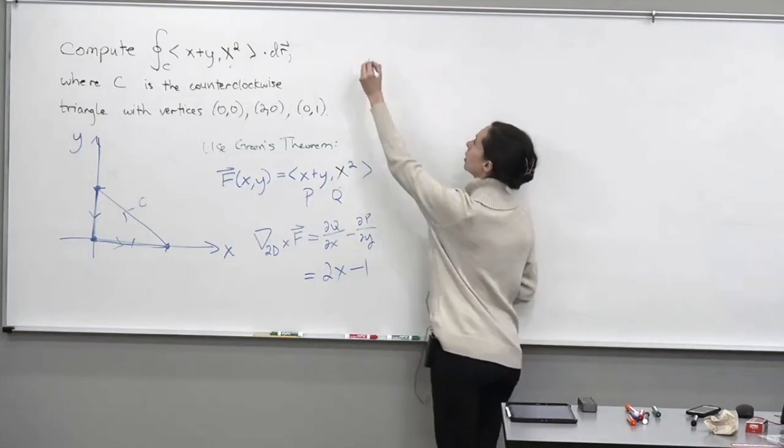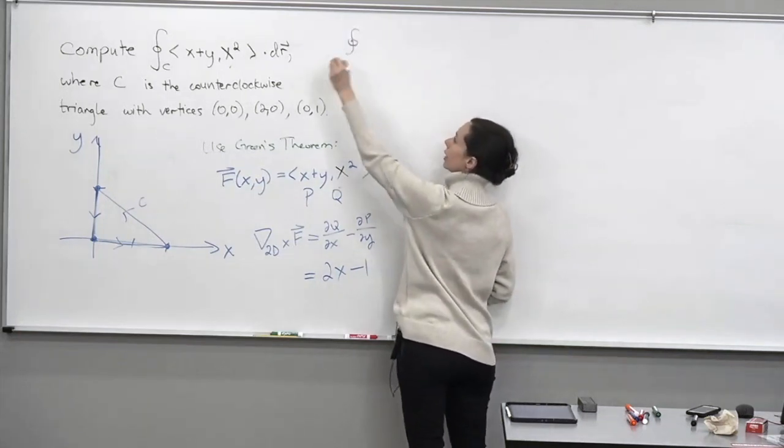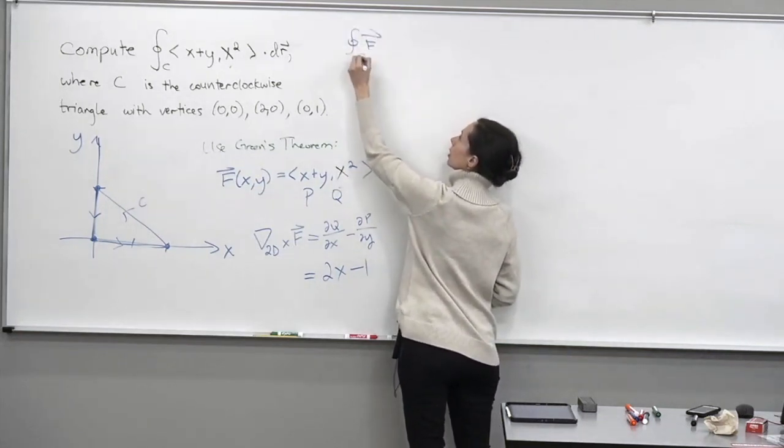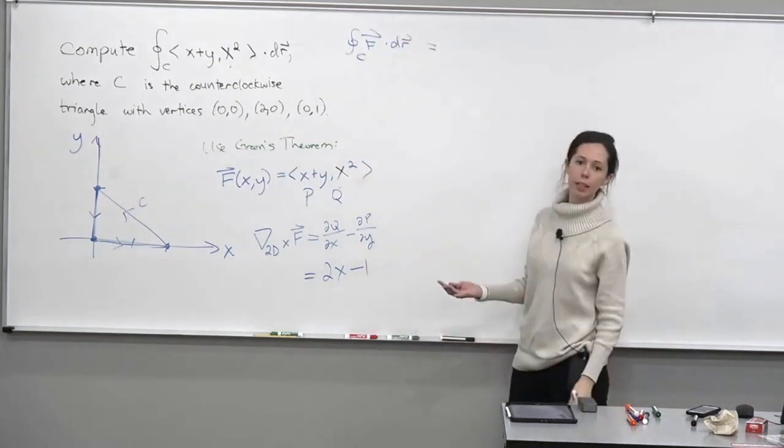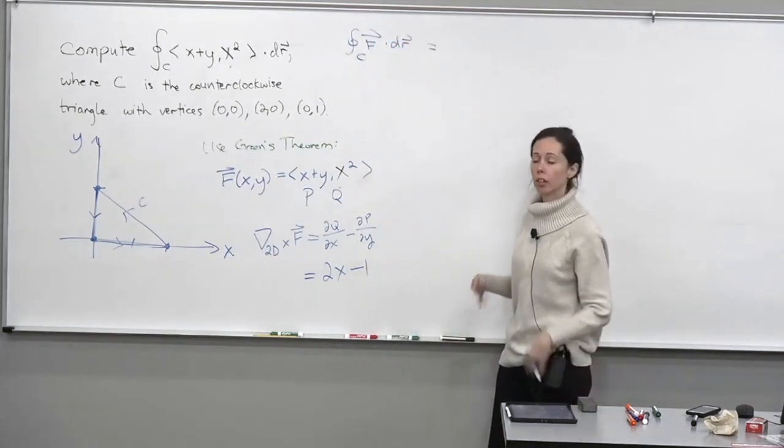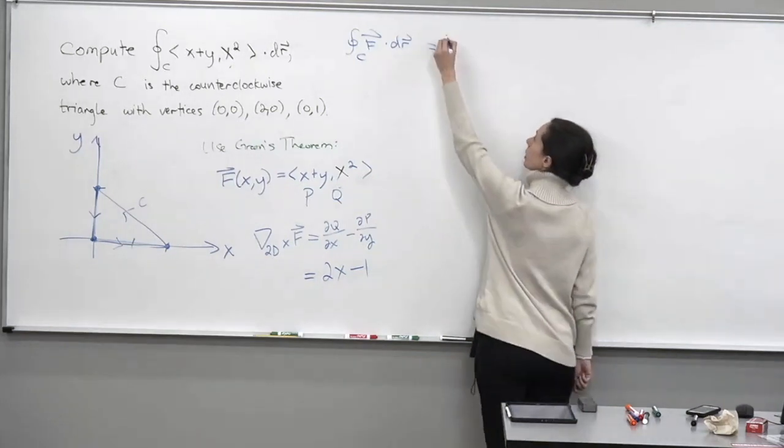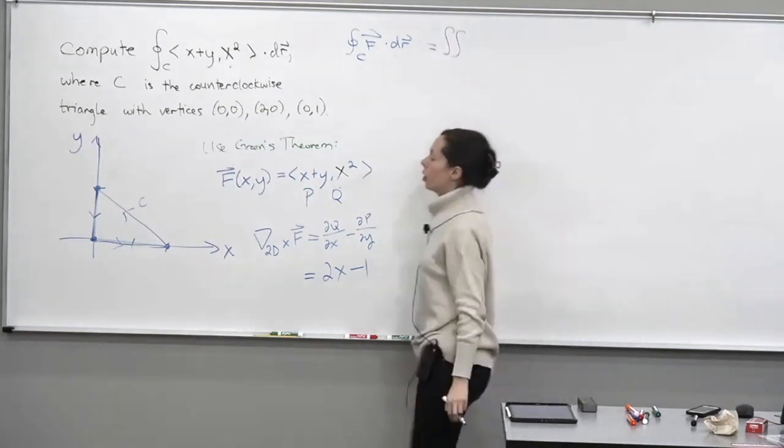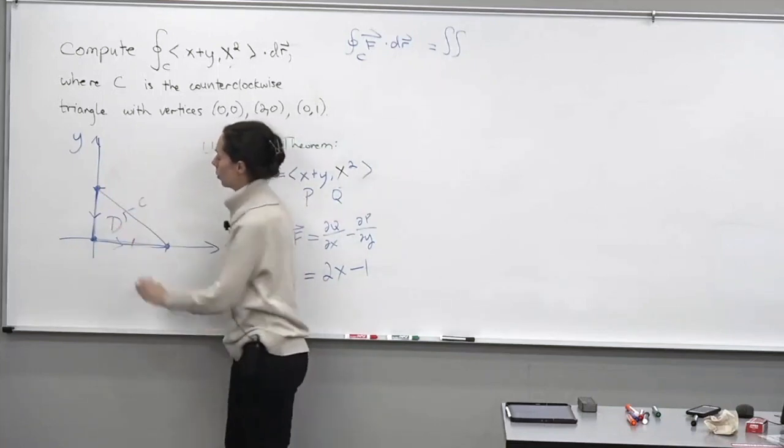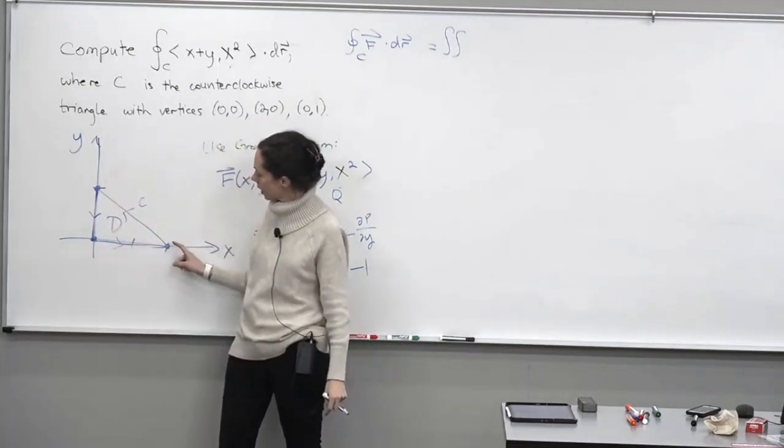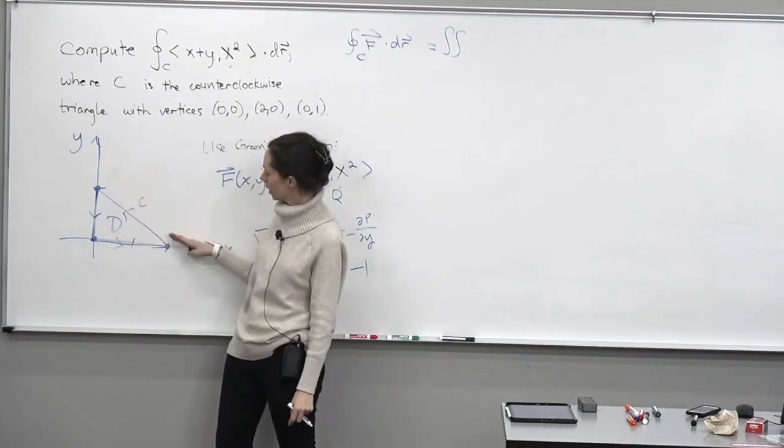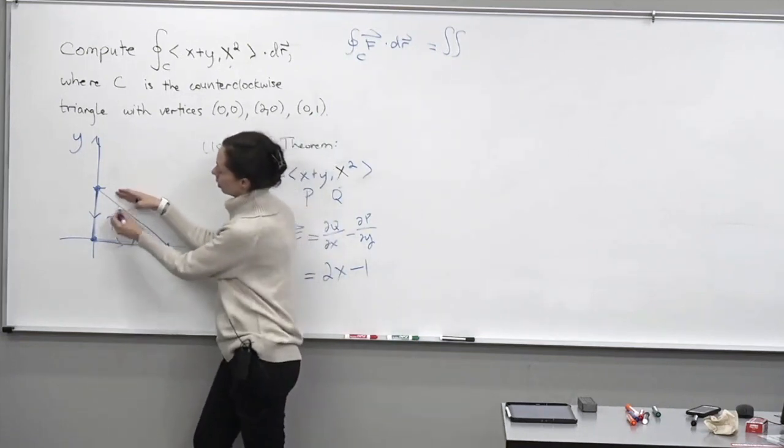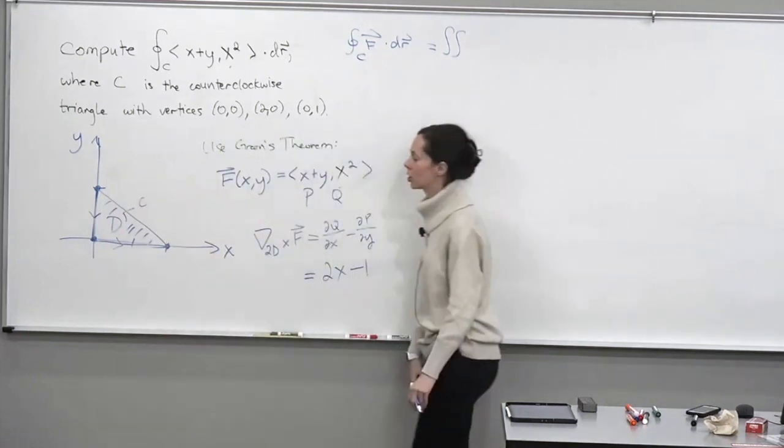Okay, so by Green's theorem, we're going to indirectly compute this vector line integral by directly computing a 2D integral, a double integral. And it's going to be the double integral over this enclosed region D. We are parametrized correctly so that as we drive around the boundary of D, the region D is on our left. Okay, so that's the correct orientation for Green's theorem.